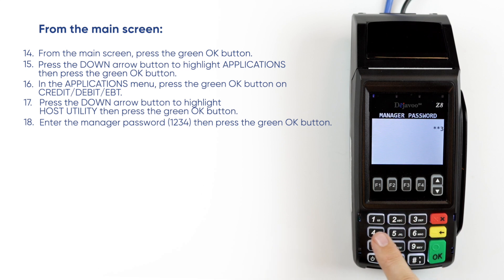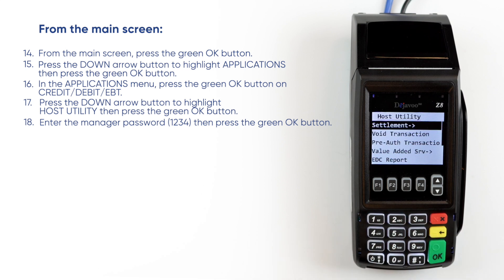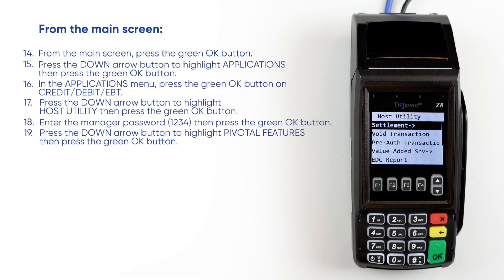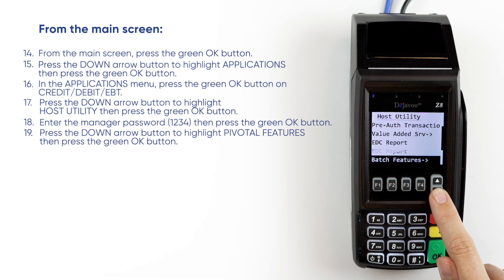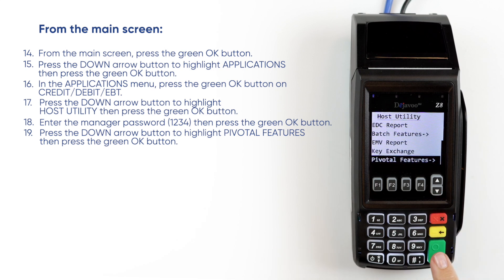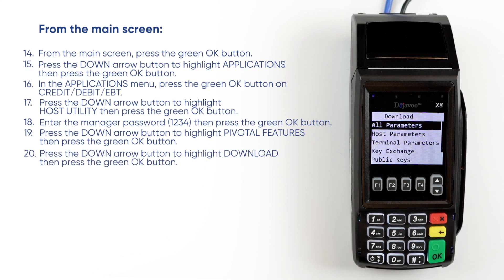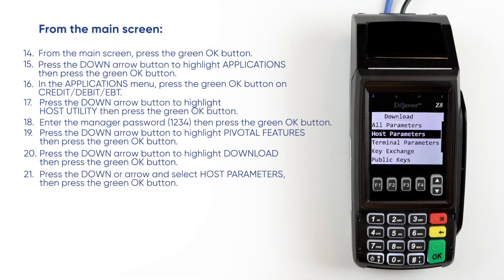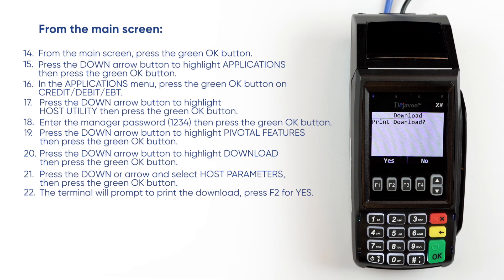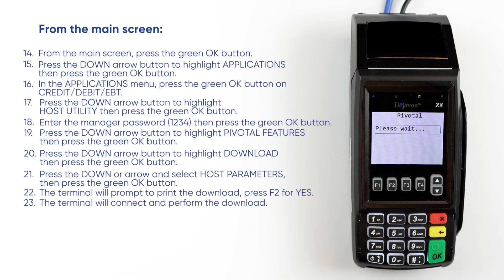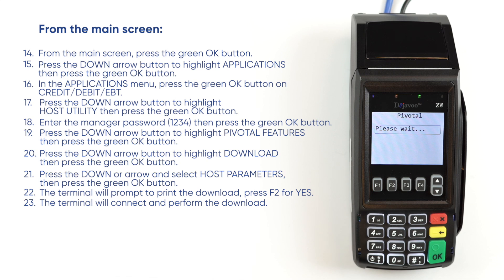Enter the manager password 1234, then press the green OK button. Press the down arrow button to highlight Pivotal Features, then press the green OK button. Press the down arrow button to highlight Download, then press the green OK button. Press the down arrow and select Host Parameters, then press the green OK button. The terminal will prompt to print the download — press F2 for yes. The terminal will connect and perform the download.